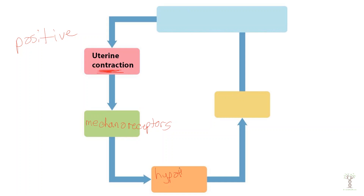Those mechanoreceptors send information to the integrating center — in this example also the hypothalamus — which triggers an effector: oxytocin. Oxytocin is a hormone that causes the uterus to contract. So the response in a positive feedback loop increases the original stimulus. The contractions keep increasing until the baby is born and there's no more pressure on the uterus. In our bodies, most of the time when we regulate things like blood sugar, ion levels, body temperature, and blood pressure, those are regulated by negative feedback mechanisms.